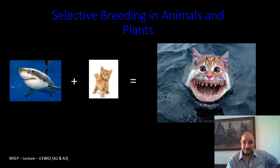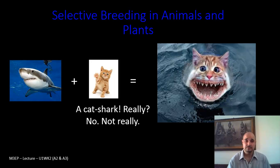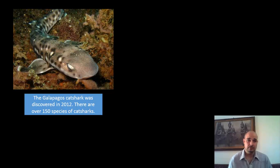The genetic information for these two species is very different, and there's no way that they would be able to produce any kind of offspring. Here's what a real cat shark looks like. This is a Galapagos cat shark that was first discovered only three years ago in 2012, and there are over 150 species of cat shark.